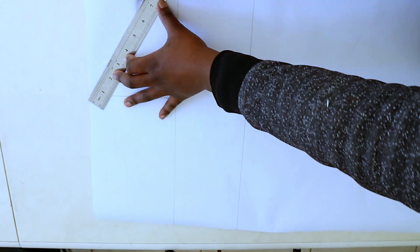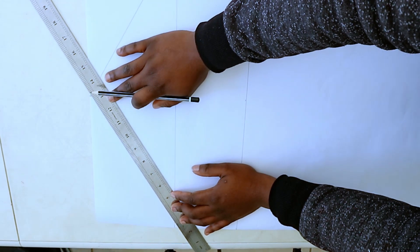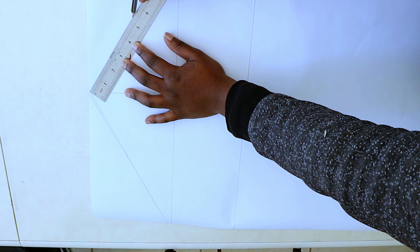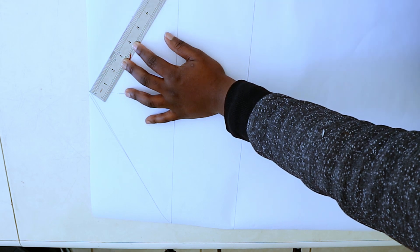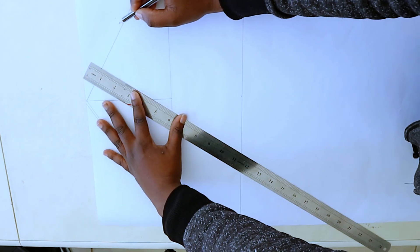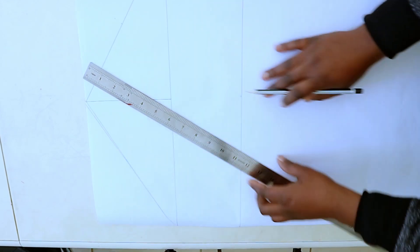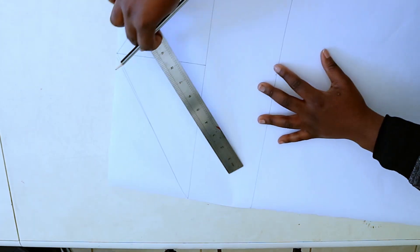Divide half of the bicep circumference on both sides of the vertical line and square that across. Draw a diagonal line on both sides to connect the half bicep circumference point to the midpoint of the sleeve head. On the right side, divide that line by four parts. Drop the third mark by half an inch, then raise the first mark by 1 inch. This is because the front armhole is deeper than the back armhole.